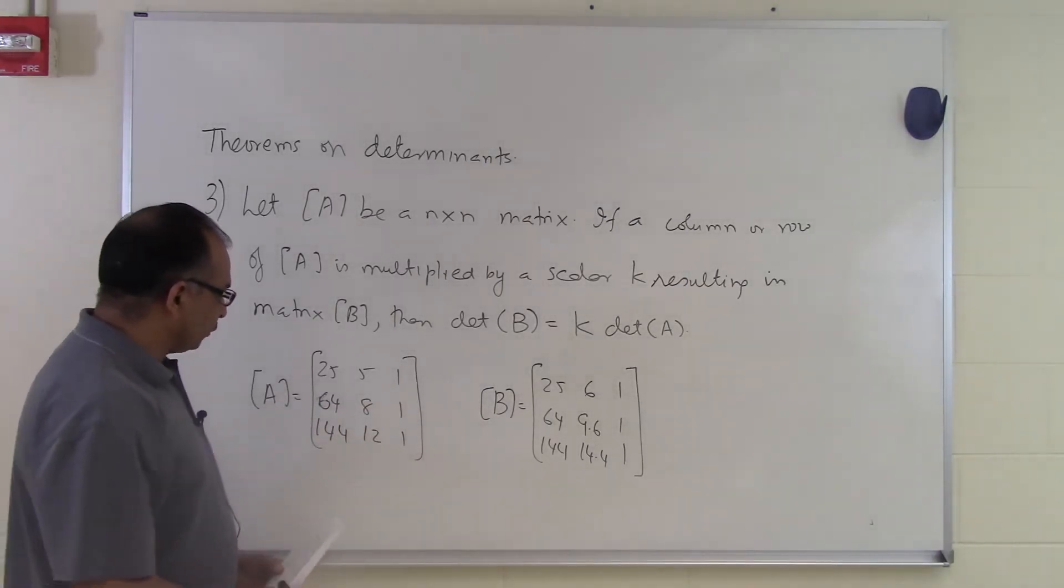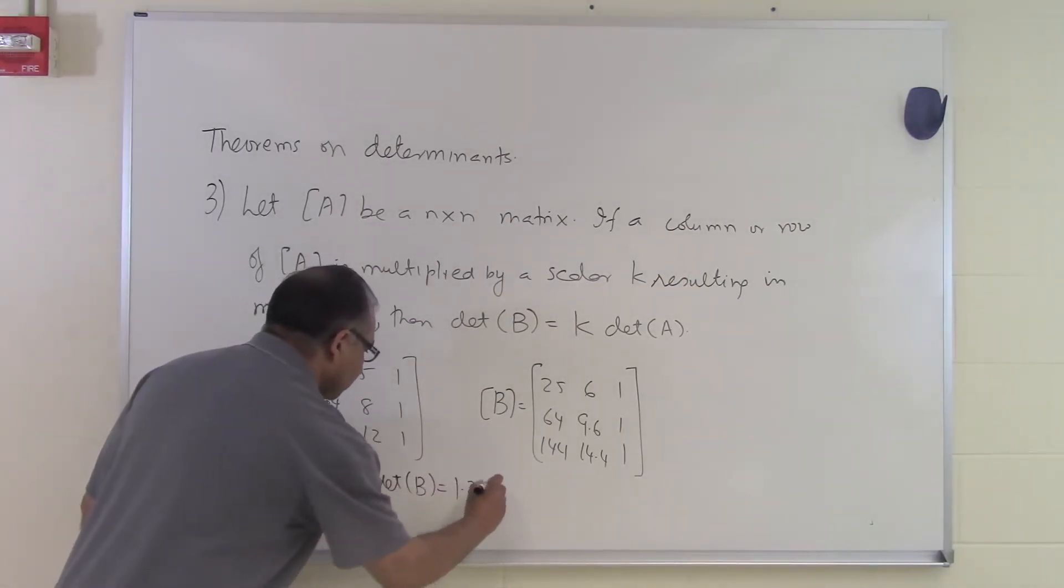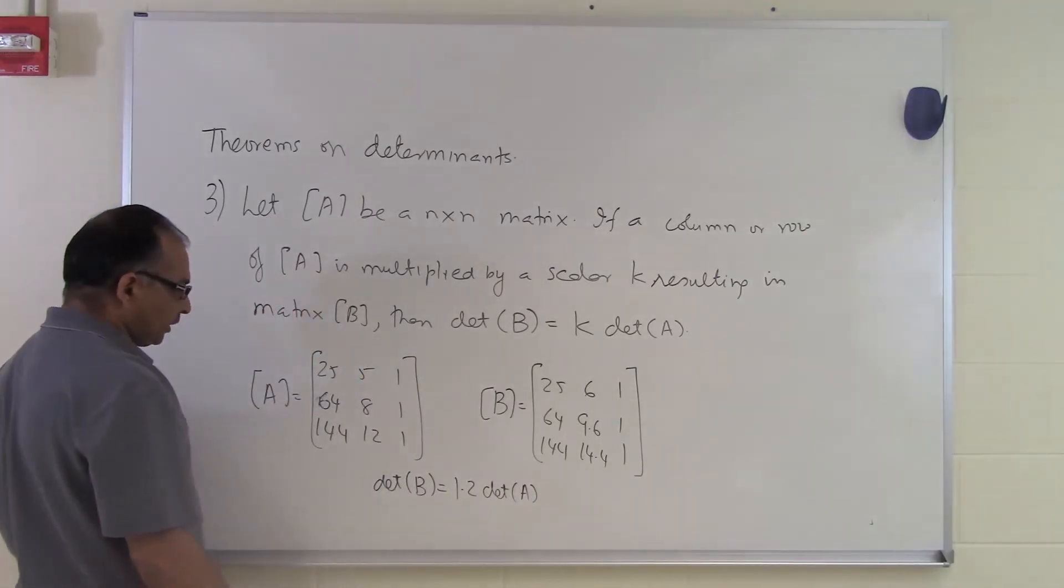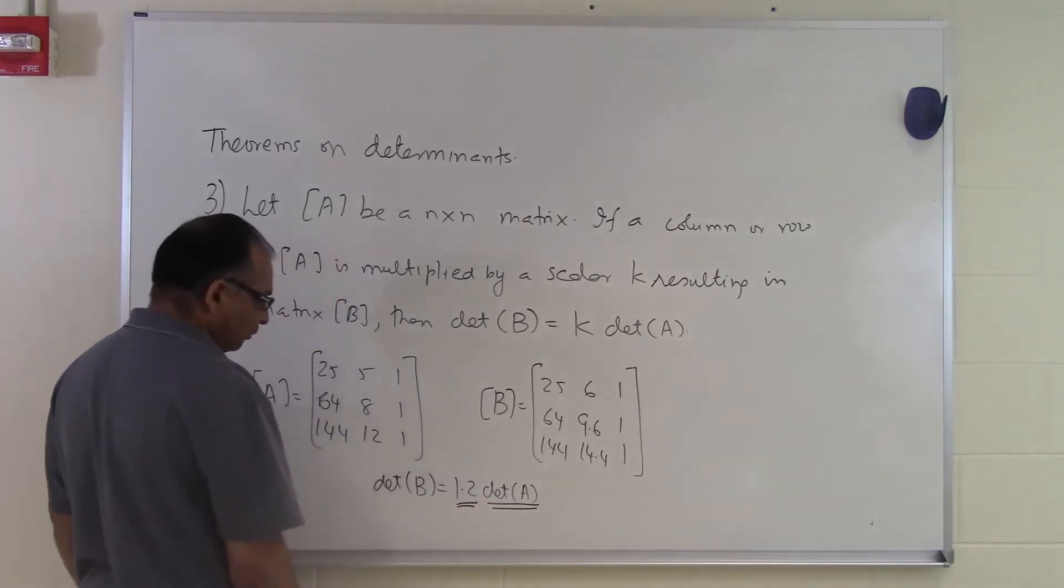So based on that, we can say that the determinant of B is 1.2 times the determinant of A. So if we know what the determinant of A is, then we can find out what the determinant of B is.